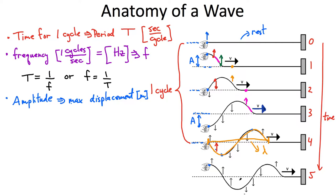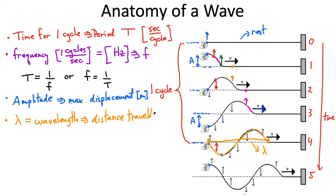Using the letter lambda — that's what we call the wavelength of this wave. What is the wavelength? It really simply means it's the distance traveled by the wave in one period. That's the definition of the wavelength.